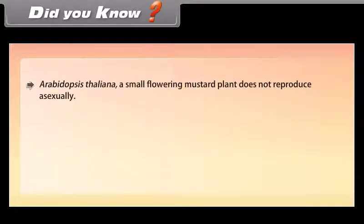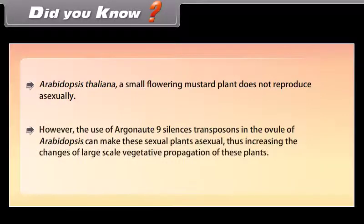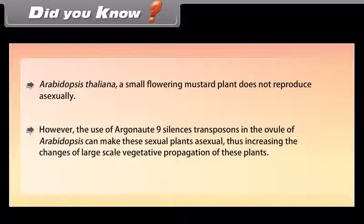Arabidopsis thaliana, a small flowering mustard plant, does not reproduce asexually. However, the use of certain transposons in the ovule of Arabidopsis can make these sexual plants asexual, thus increasing the chances of large-scale vegetative propagation of these plants.